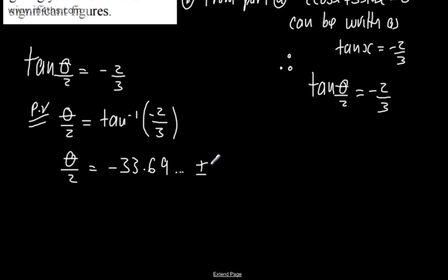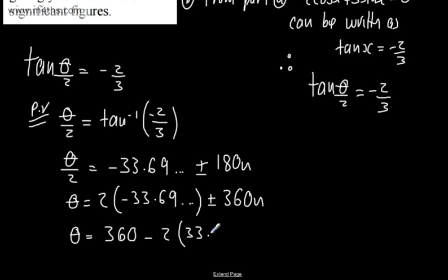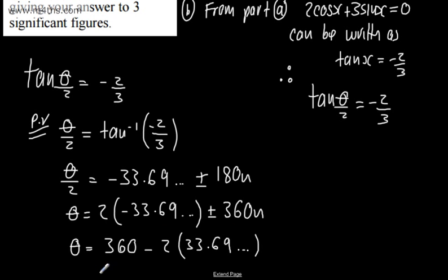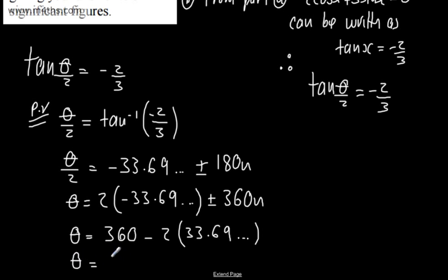This is a tan equation, so it repeats every 180°. Multiplying through by 2: θ = 2 × (-33.69...) ± multiples of 360°. Adding 360° gives 360° - 2(33.69...) = 292.6...°. So θ = 292.6...°, which to 3 significant figures is 293°.